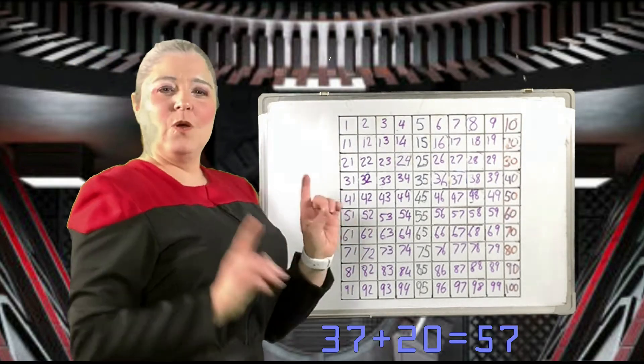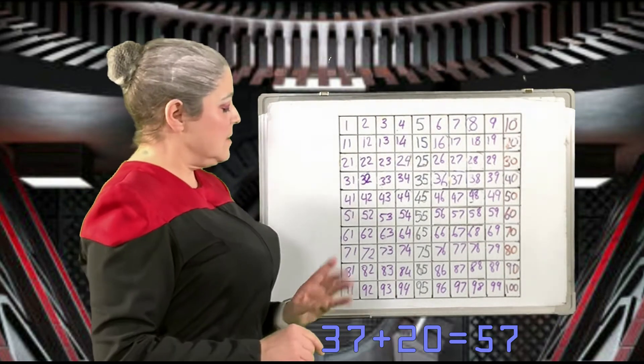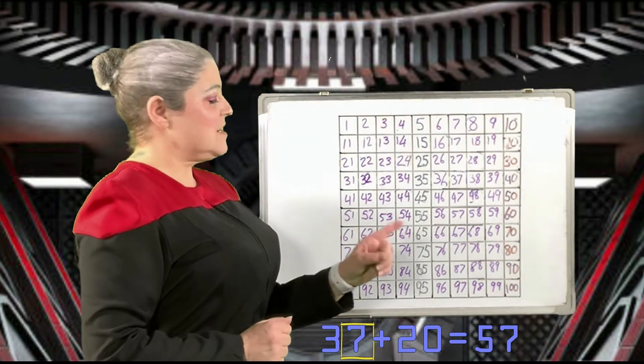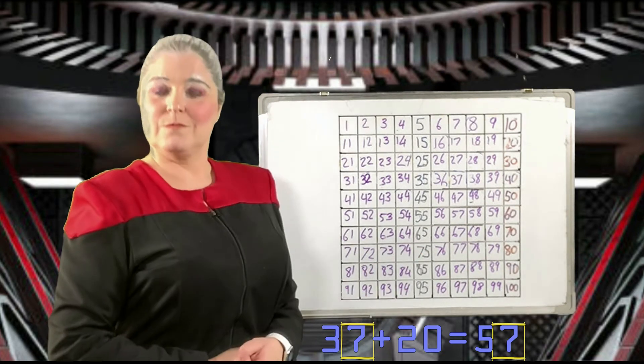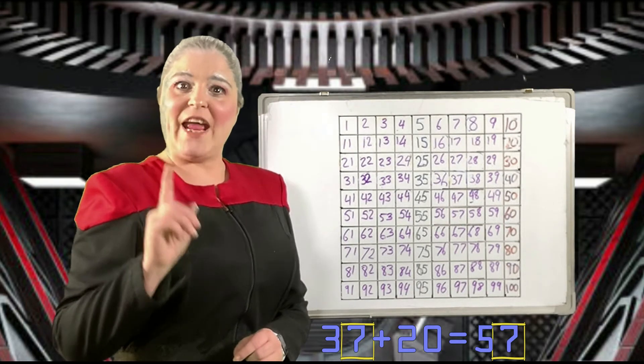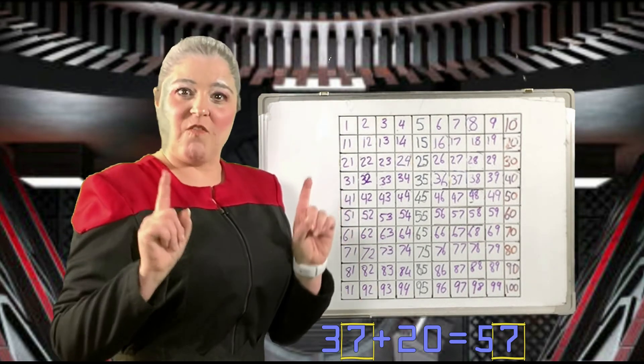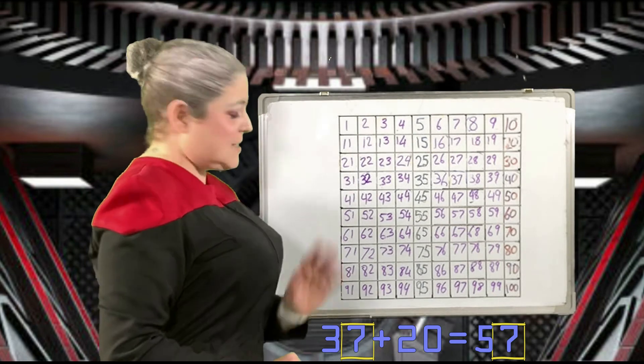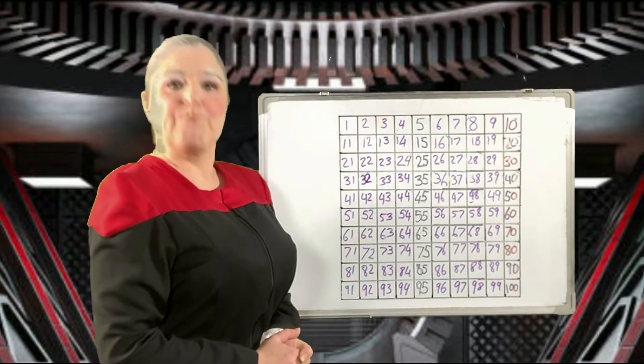Now, what do you notice about the number of ones in the first number of the sum and the number of ones in the answer? That's right. They are exactly the same. When we add multiples of 10 to a two-digit number, the number of ones in the answer stays the same as the number of ones at the beginning of the sum. Keep that in mind as we do the next one.